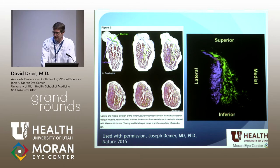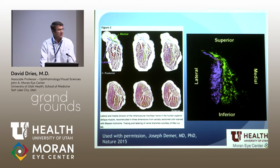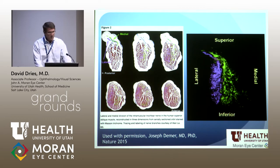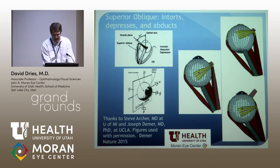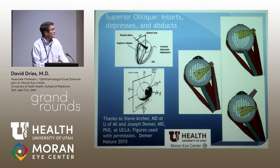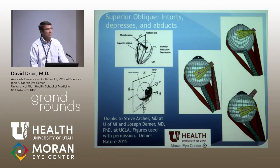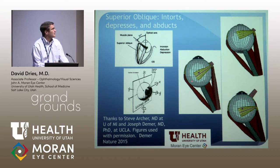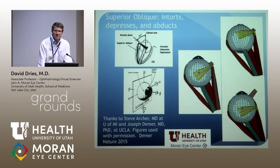Thank you to Dr. Joseph Demer at UCLA and Steve Archer at the University of Michigan for helping me with figures and multiple discussions over the more recent years. Here you're looking at the histology of the superior oblique muscle belly, with multiple cuts starting posteriorly and then marching anteriorly. The two colors correspond to two branches of the trochlear nerve — the green color innervates one region, the purplish color another. Here is a reconstruction of selective separate innervation of the two compartments of the superior oblique.